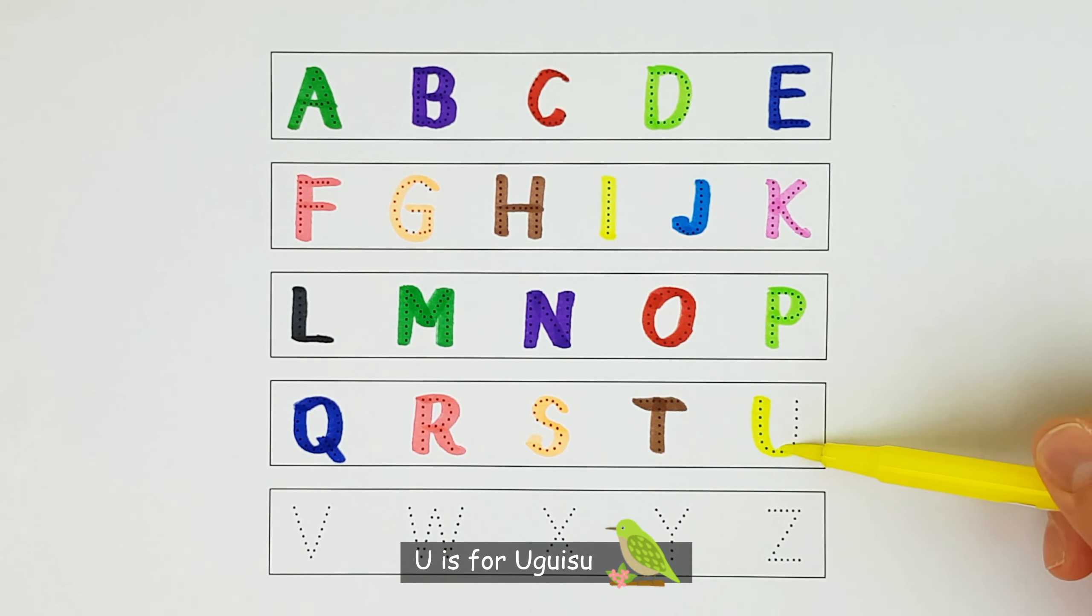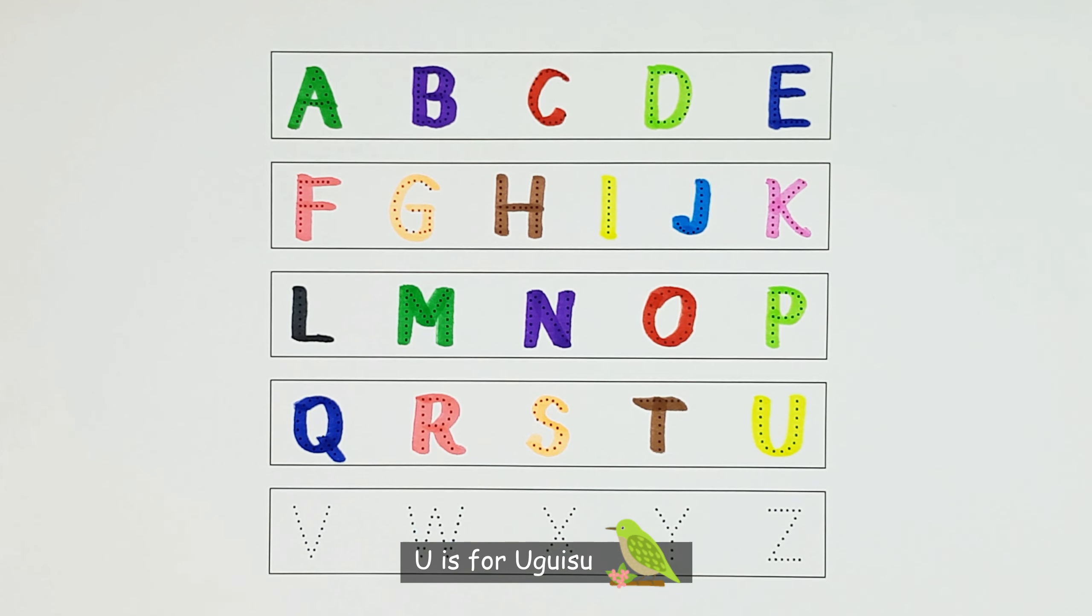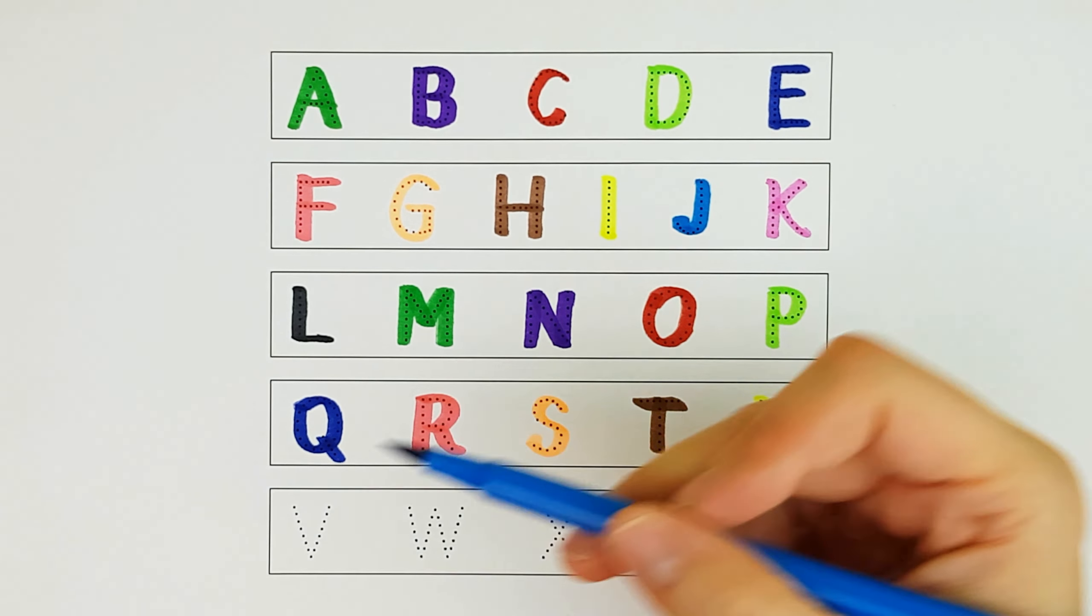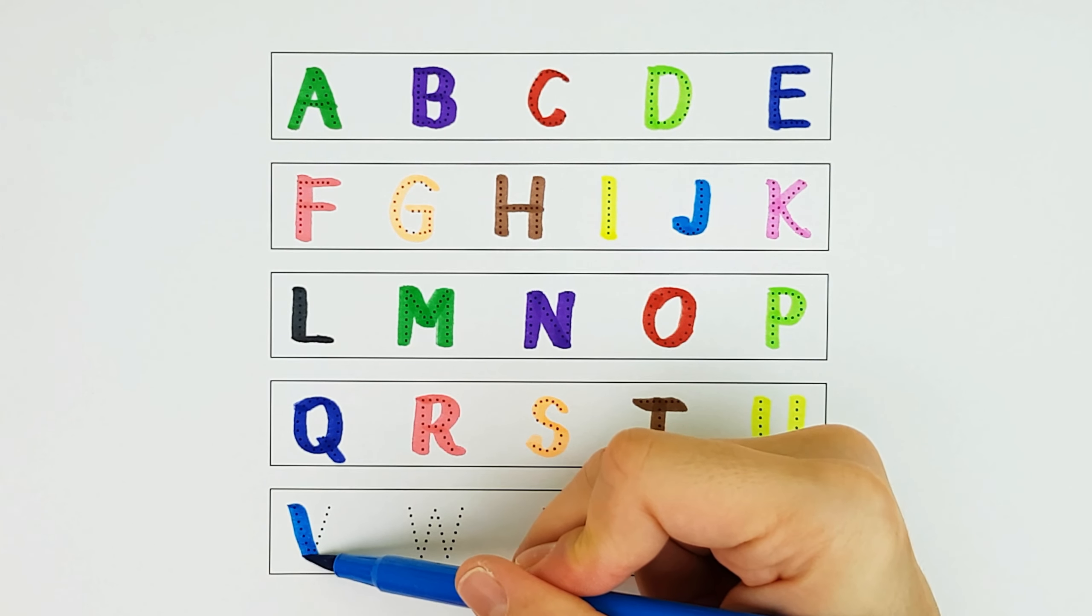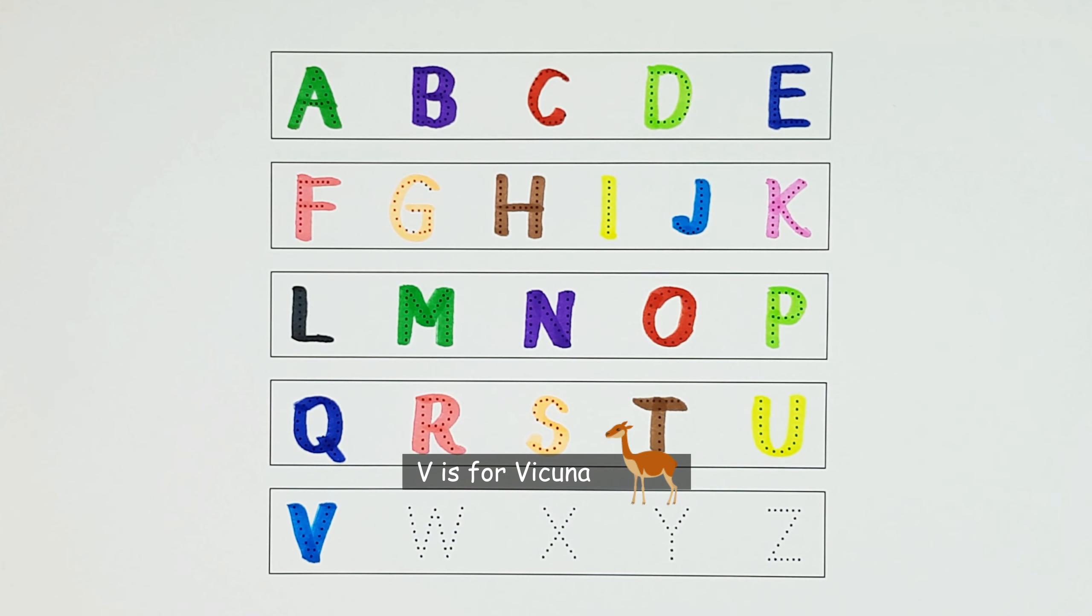U. U is for Yugisu. U. V. V is for Vicuna. V.